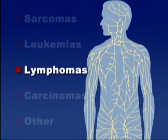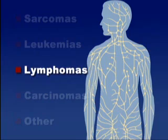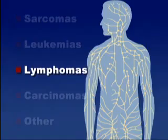Lymphomas affect the lymphatic system, a network of vessels and nodes that acts as the body's filter. There are at least 30, and perhaps more, different types of lymphomas.